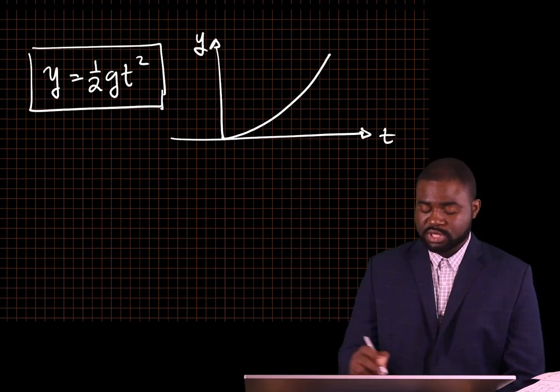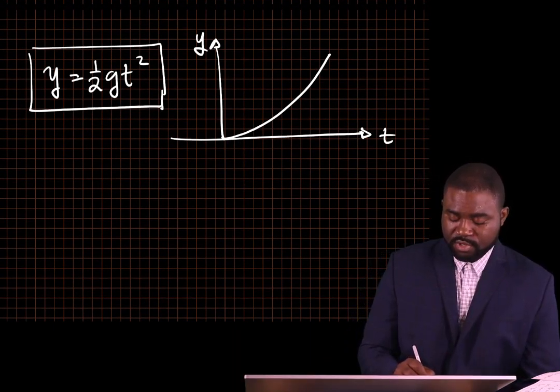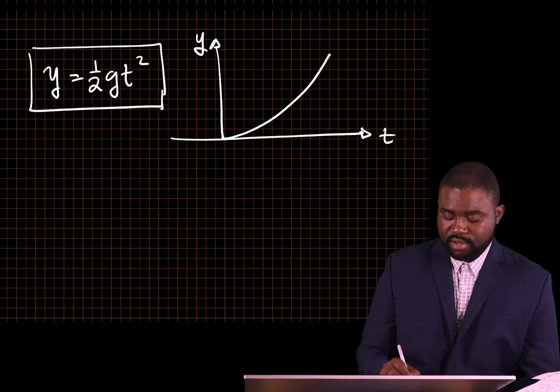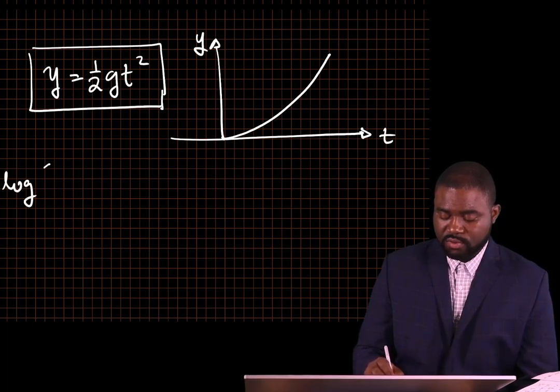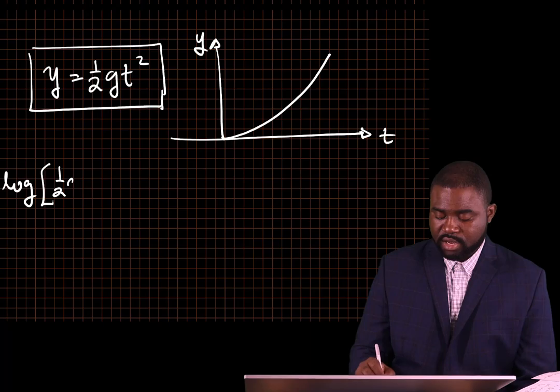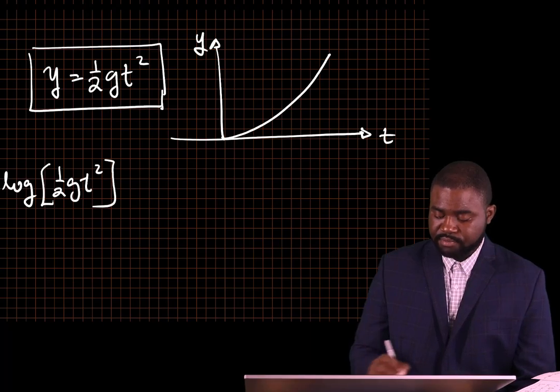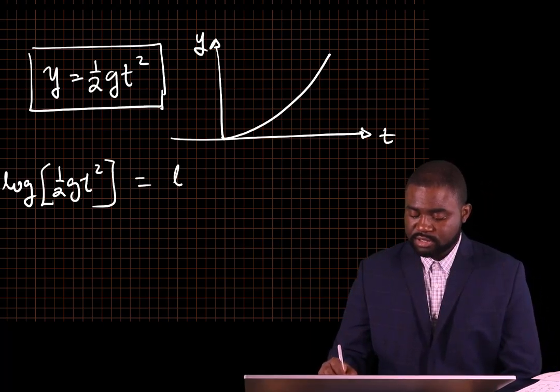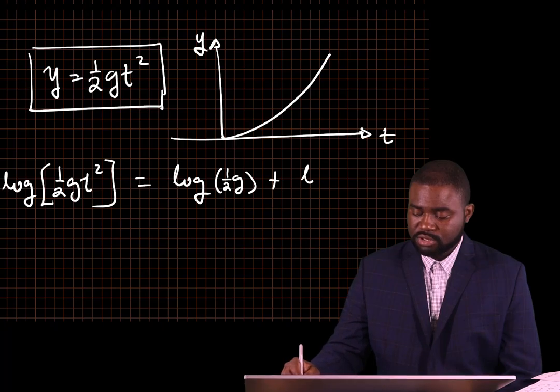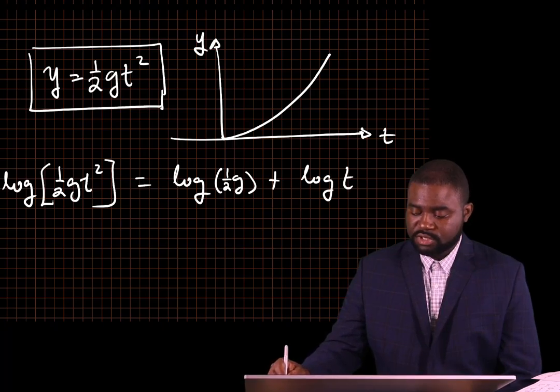That is where logarithms will actually come into play. For example, if you take the logs of both sides, you will have log y equals log(1/2 gt²). This is the same as log(1/2 g) plus log t²,